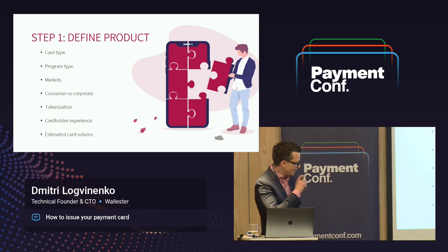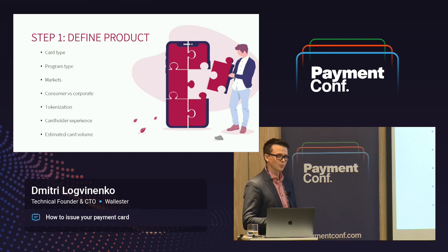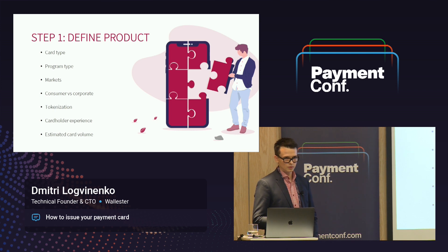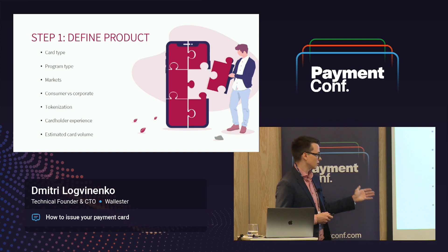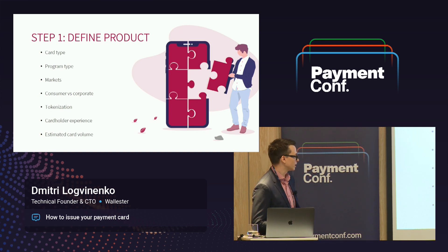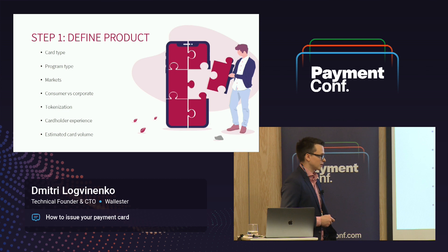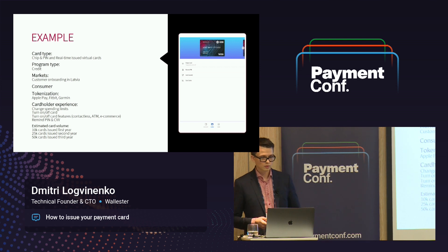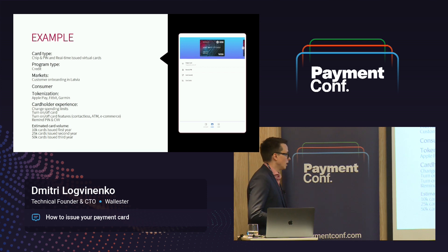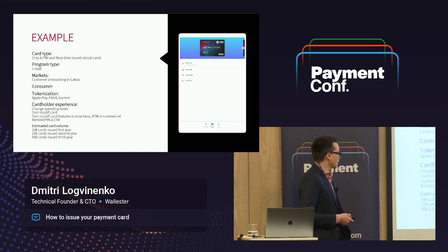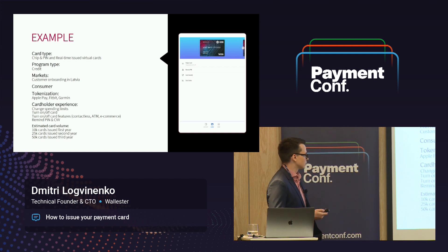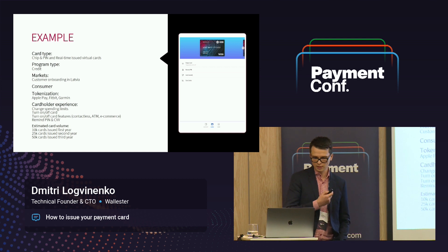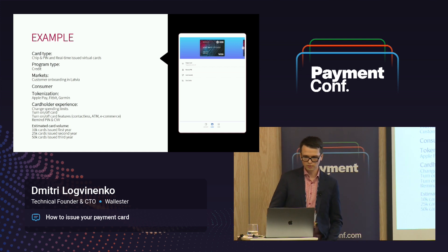Volumes are also not the least important factor. Some companies have very high expectations, and that will clearly affect the decision to go self-issuing, white label, or co-branded. You need to spend time estimating what the volume for your cards will be over at least the next three years. As an example: a chip-and-pin card with real-time issuance, a credit card in Latvia, consumer, with Apple Pay, Fitbit, and Garmin — with reasonable, not too aggressive volumes.